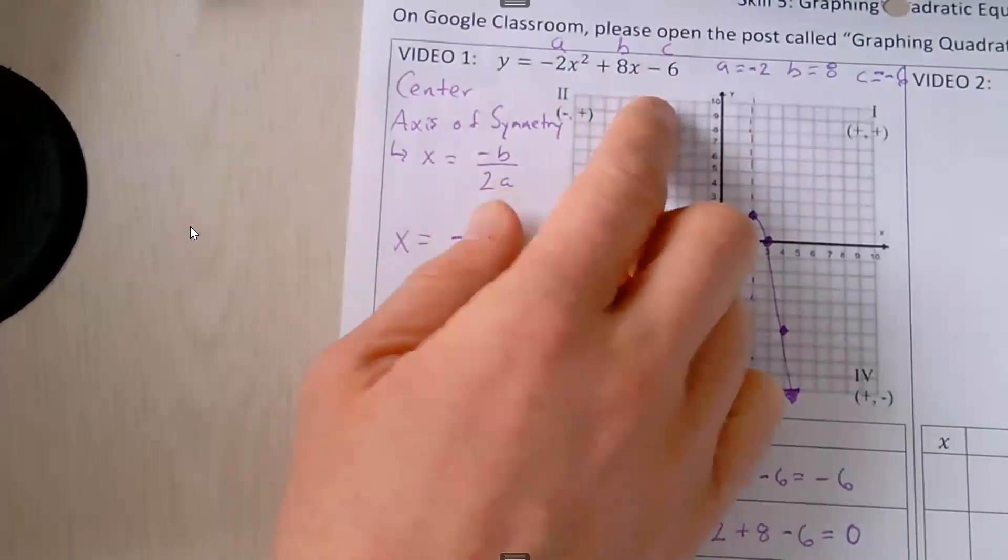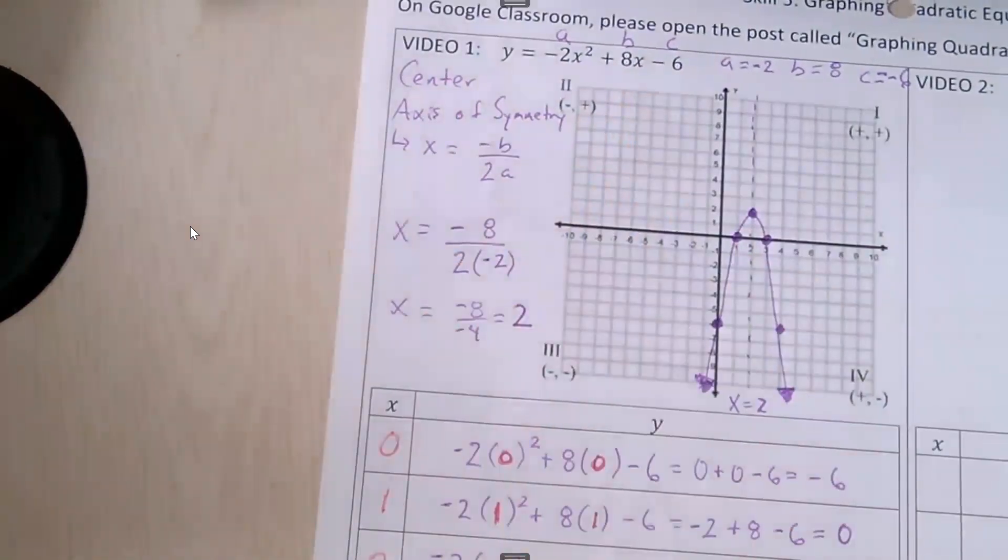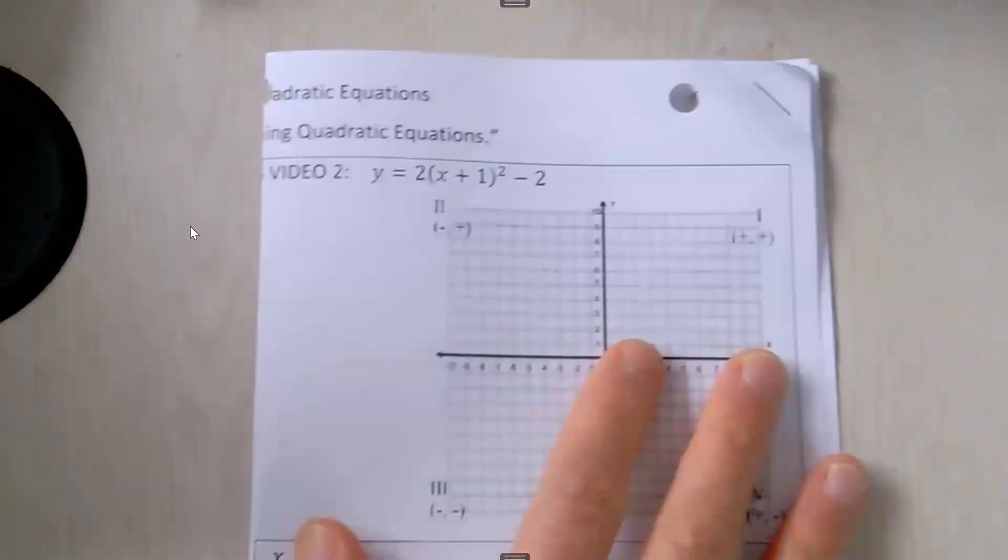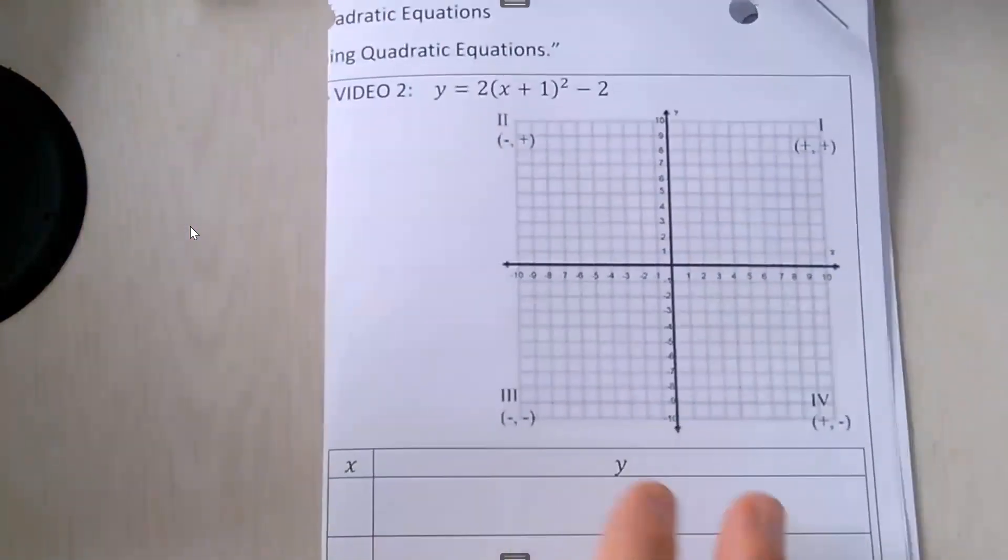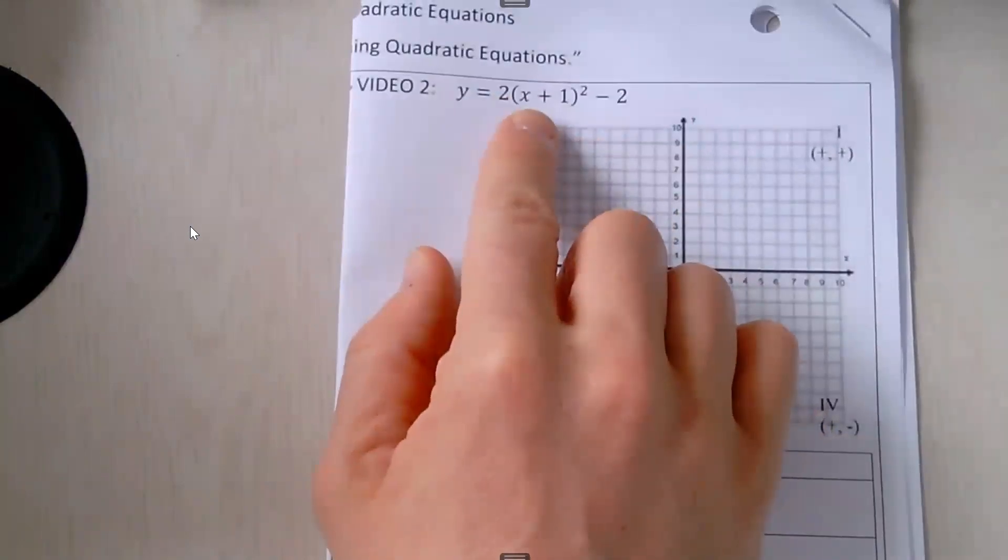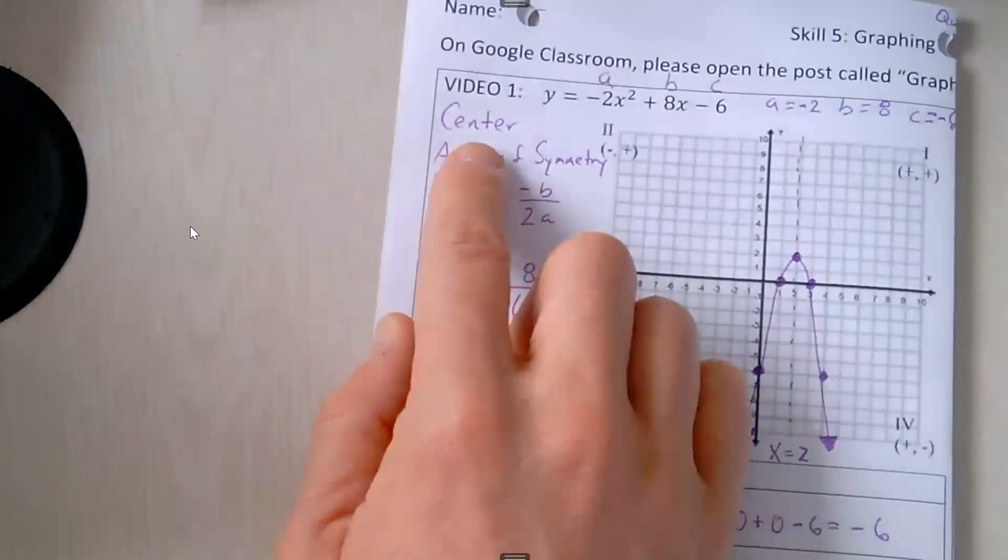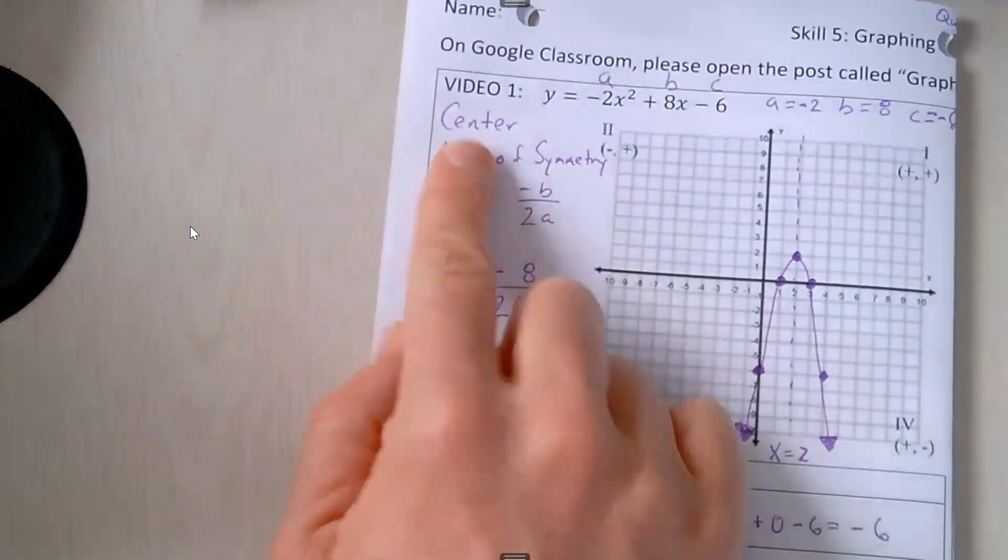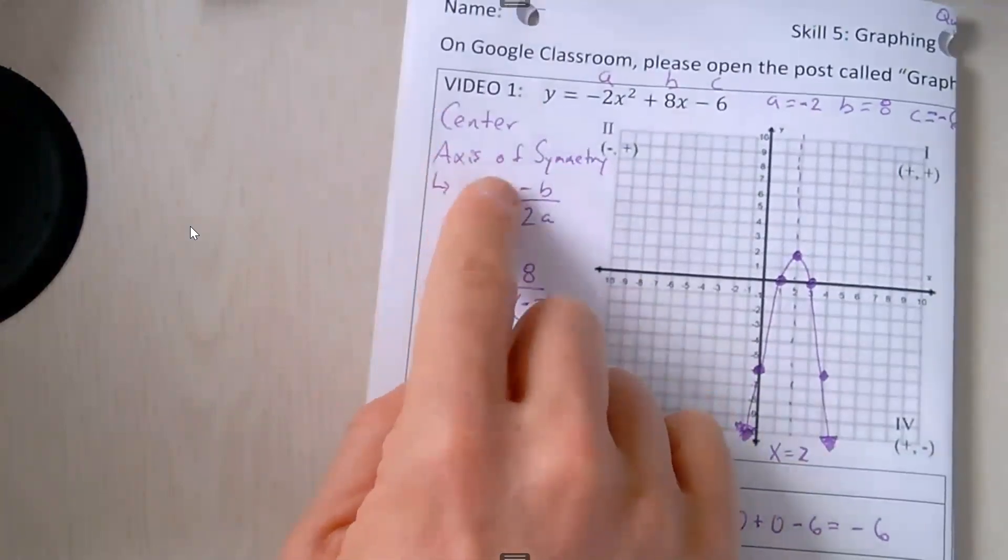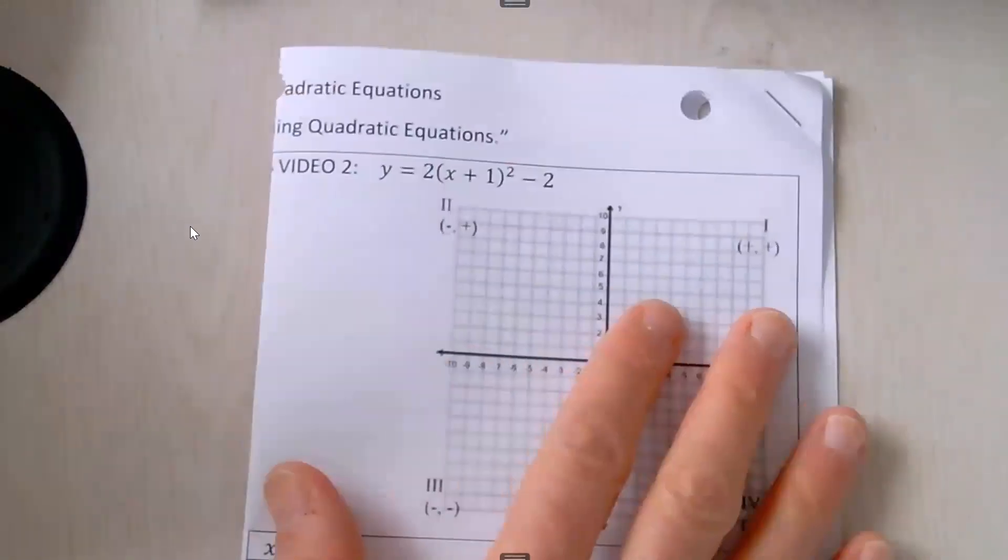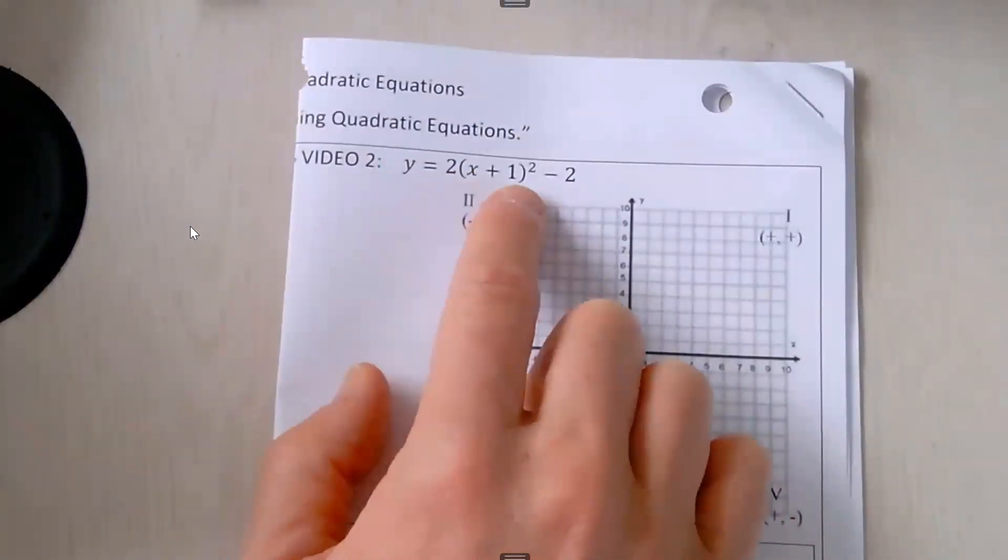Now we're going to look at a quadratic in vertex form, and vertex form has parentheses. So just like before, we need to find the center of the quadratic. We need to find the axis of symmetry, and here's how you do it when we have vertex form, when we have parentheses.